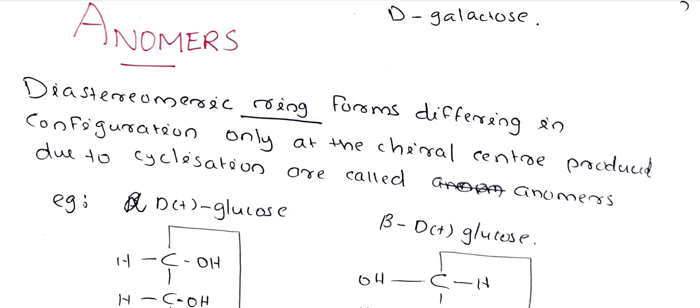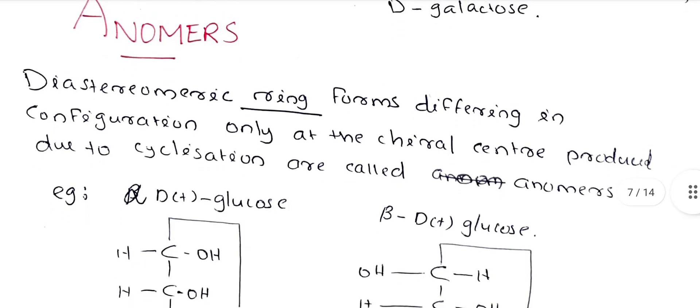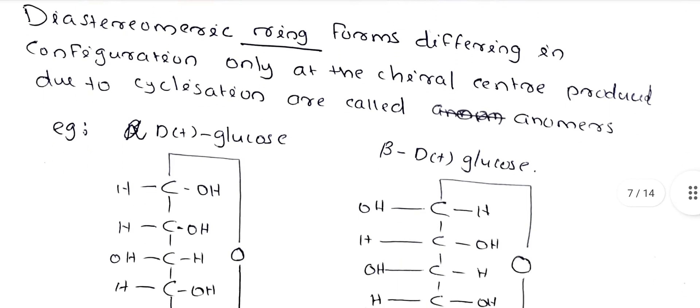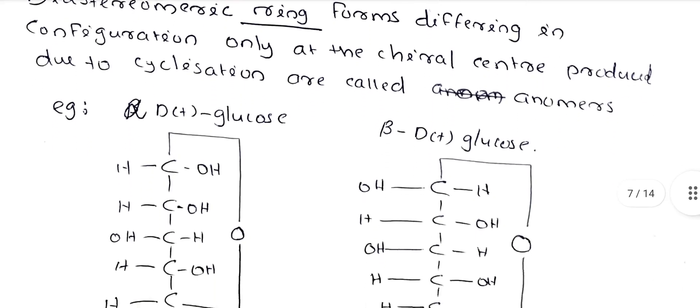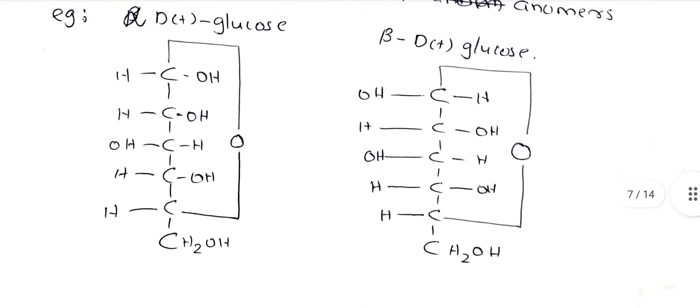We have discussed pyranose — glucose pyranose, fructopyranose. The ring form of anomers uses alpha-D-glucose and beta-D-glucose as examples. When glucose forms a cyclic structure, we get two anomers: alpha-D-glucose and beta-D-glucose.